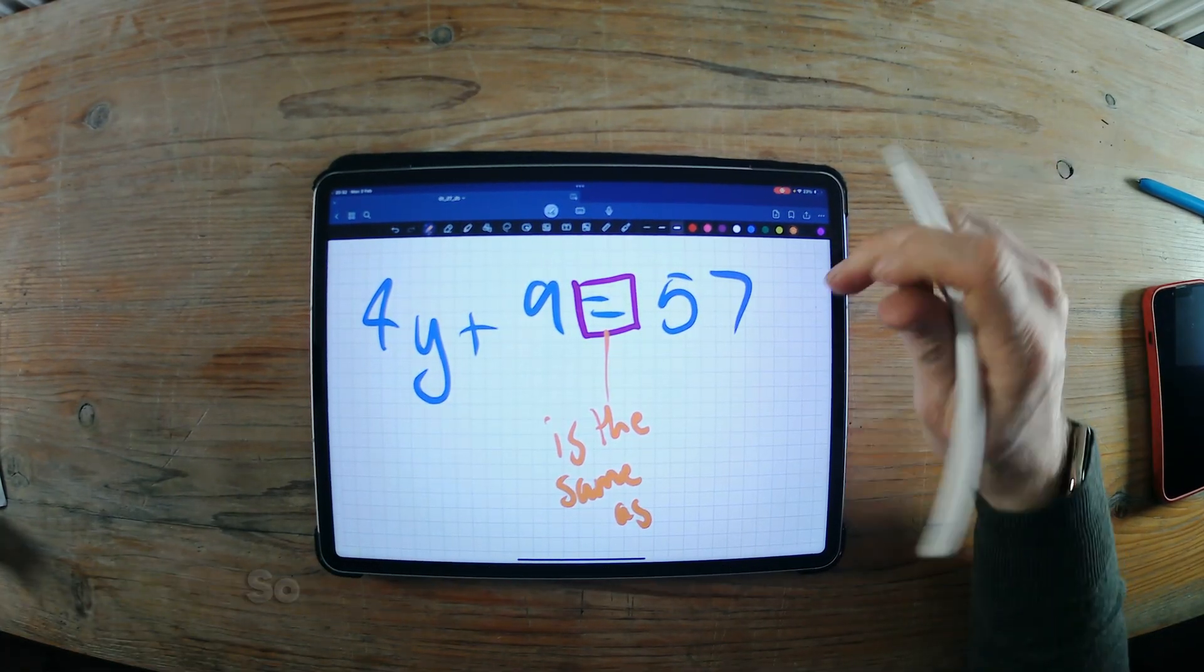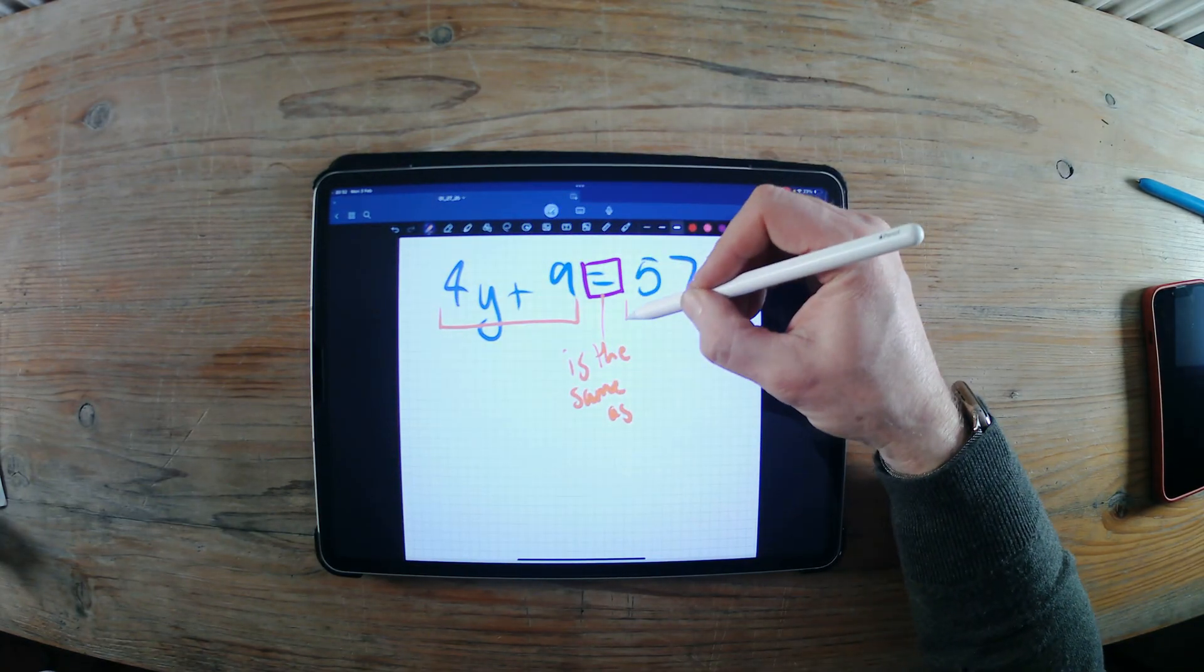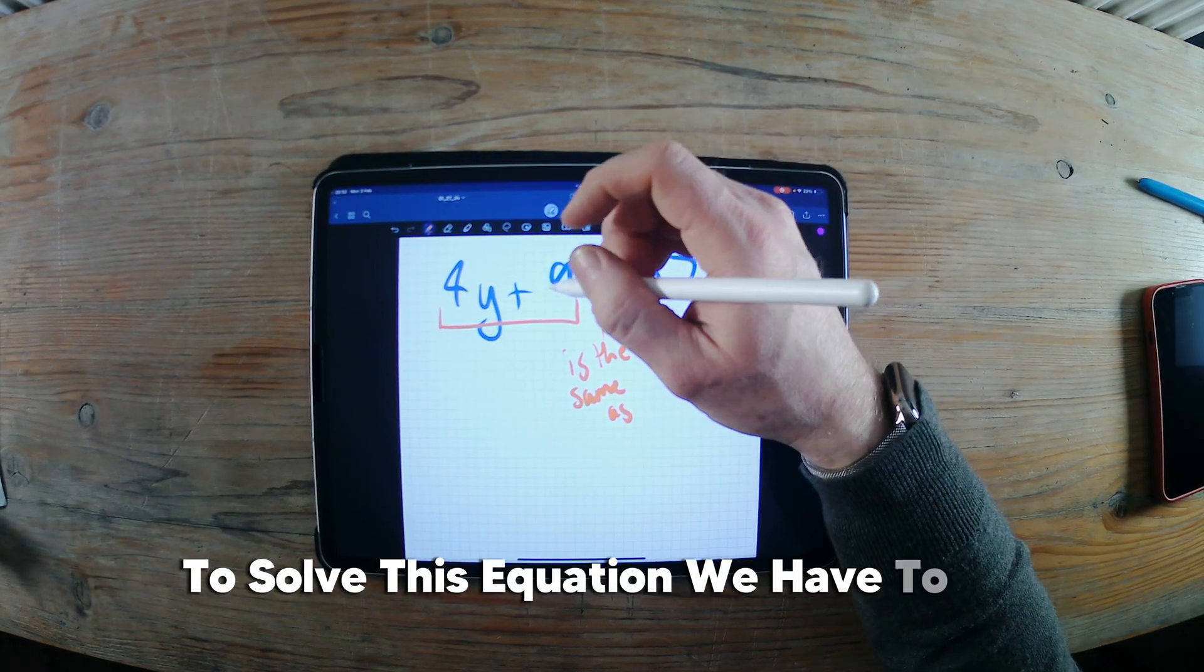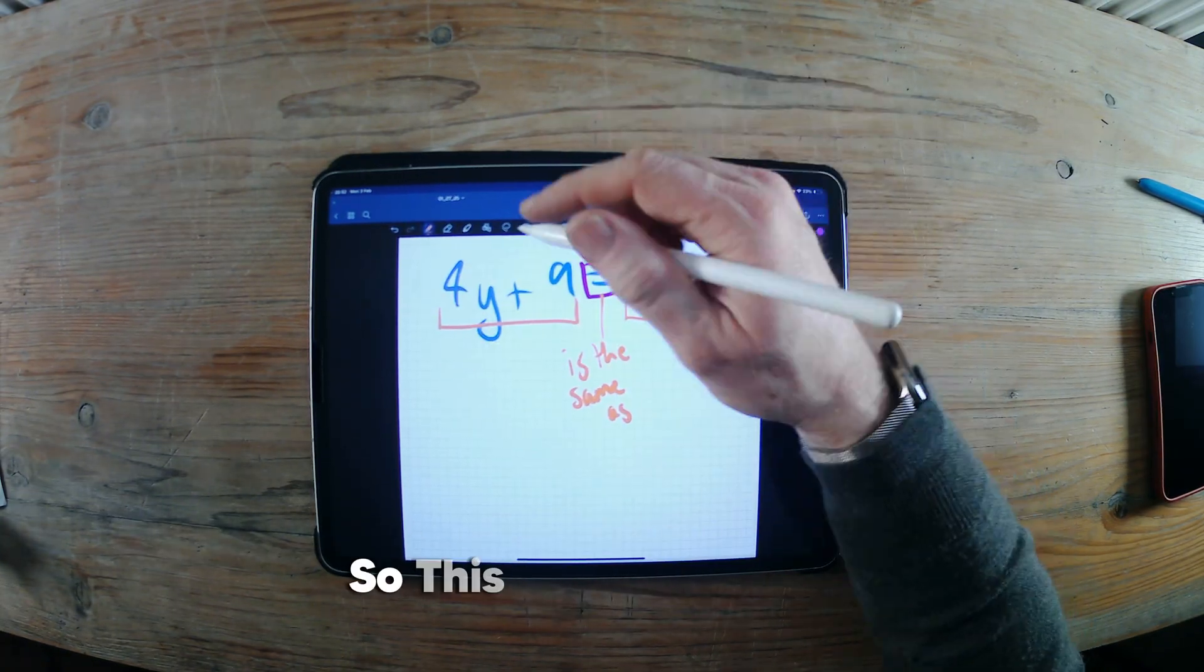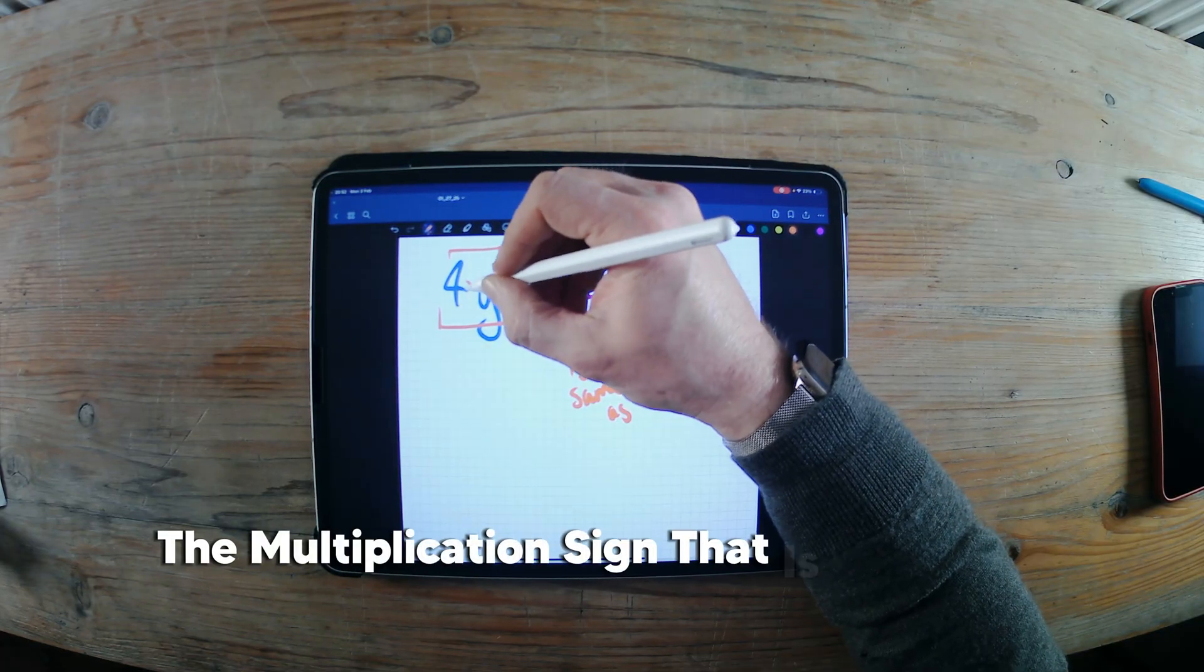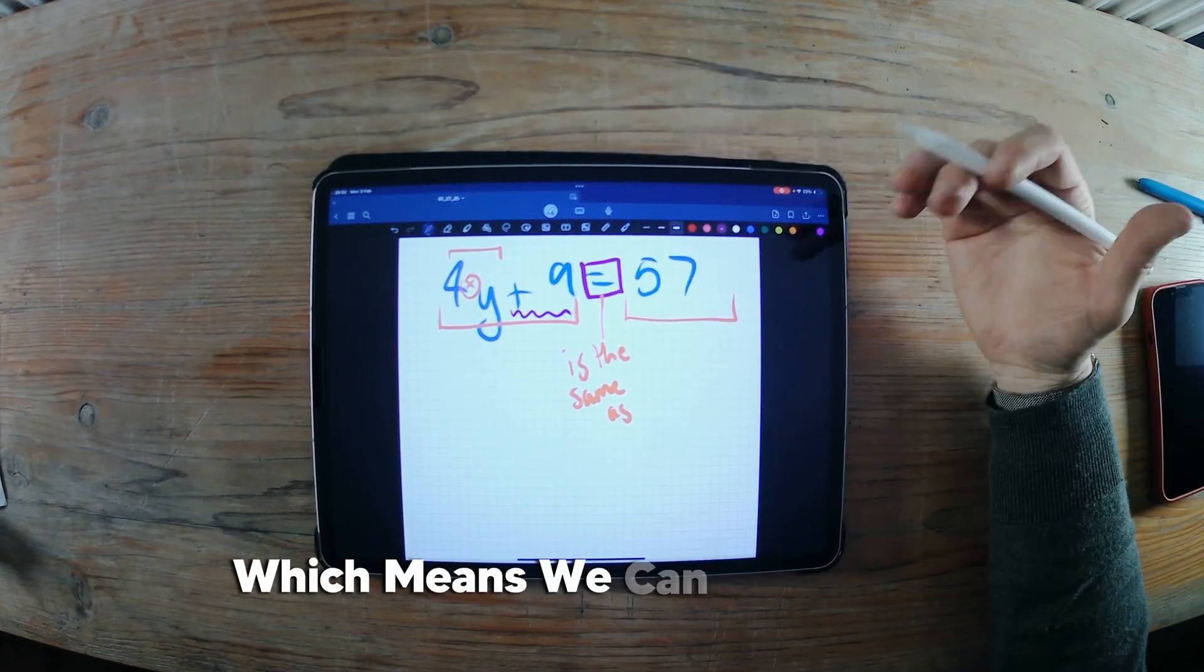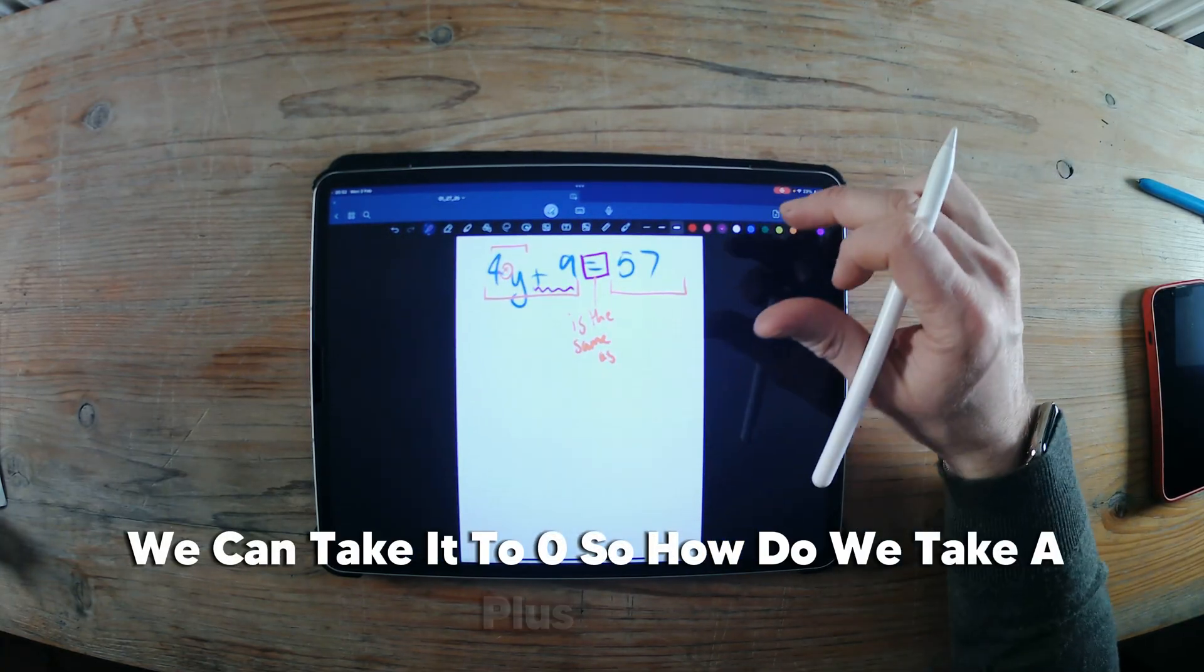Okay. So we can also think of this as a balance scale. All right? And that helps us understand why. To solve this equation, we have to eradicate things, and we have to split bonds. So this is a bond, right? The bond between the 4 and the y, the multiplication sign. That is what we call a bond. And the plus 9 here is a number, and there's nothing particularly going on with it, which means we can eradicate it. We can take it to 0. So how do we take a plus 9 to 0?